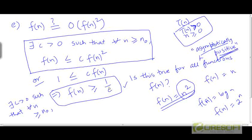But what if a function is asymptoting towards 0? For example, f equals 1/n. Is this an asymptotically positive function? Yes, it is, because it doesn't matter what value of n you choose — the value of 1/n is going to be greater than 0. But is this function going to be always greater than or equal to some constant that we choose beforehand?